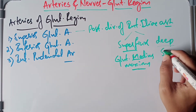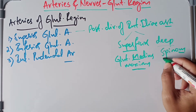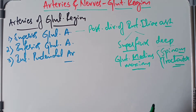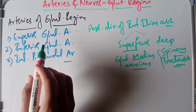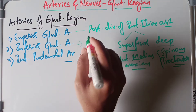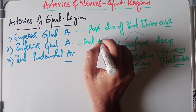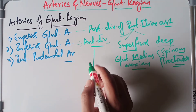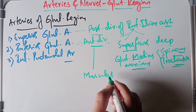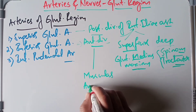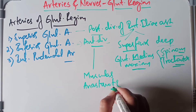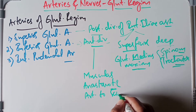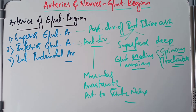The deep branch of the superior gluteal artery helps in the spinous anastomosis as well as the trochanteric anastomosis. Moving on to the inferior gluteal artery, this is a branch of the anterior division of the internal iliac artery.